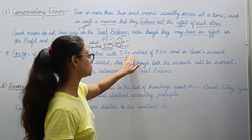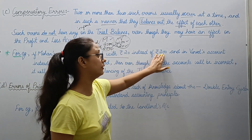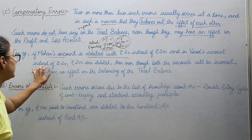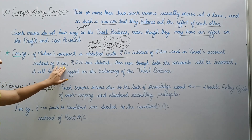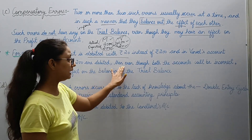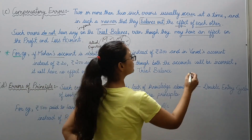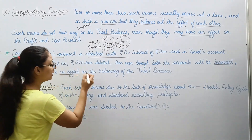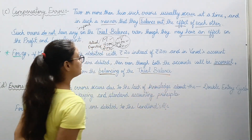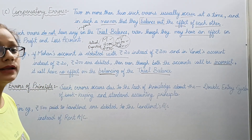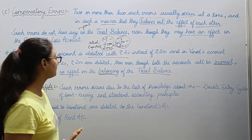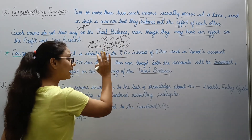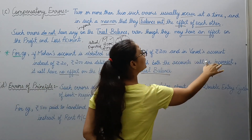If Mohan's account is debited with rupees 20 instead of 200, and in Vinod's account instead of 20, rupees 200 are debited — even then, even though both accounts will be incorrect, it will have no effect on the balancing of the trial balance. When you total the trial balance, there is no impact — this side total is 220, and that side is also 220. So no impact on trial balance, even though both accounts are incorrect.